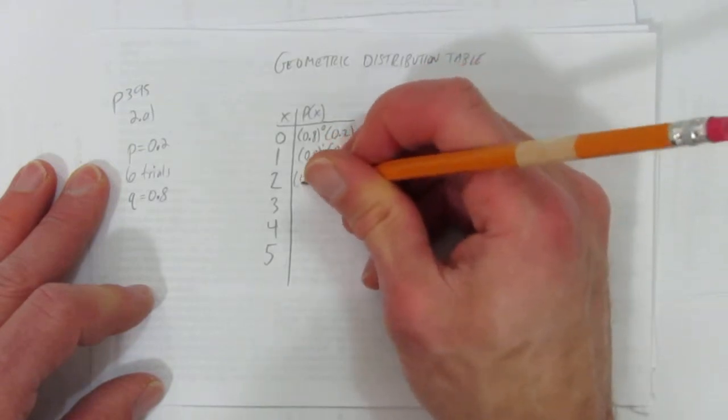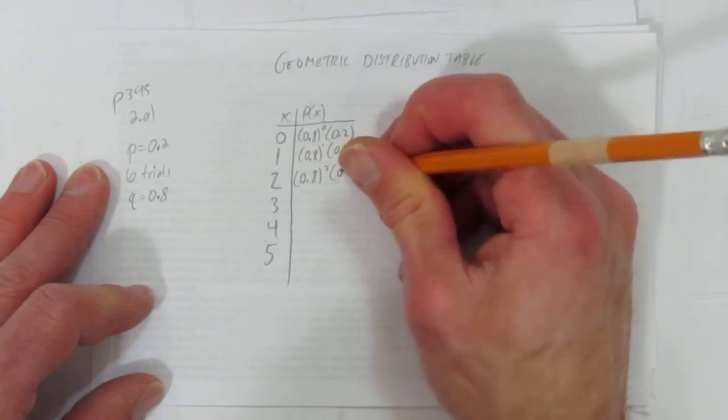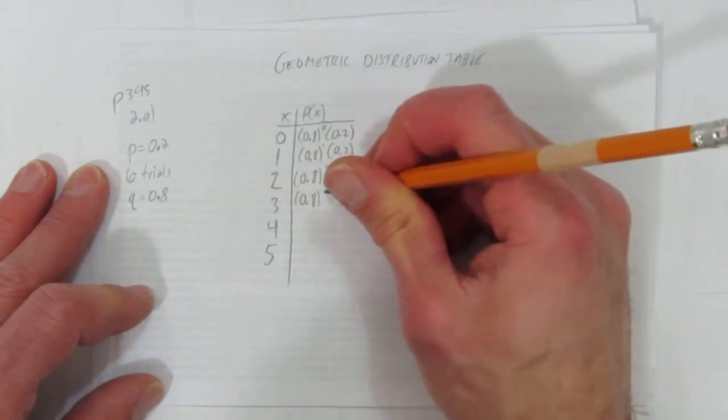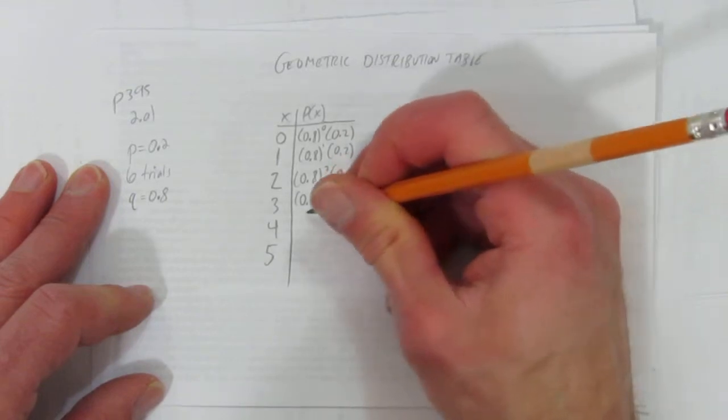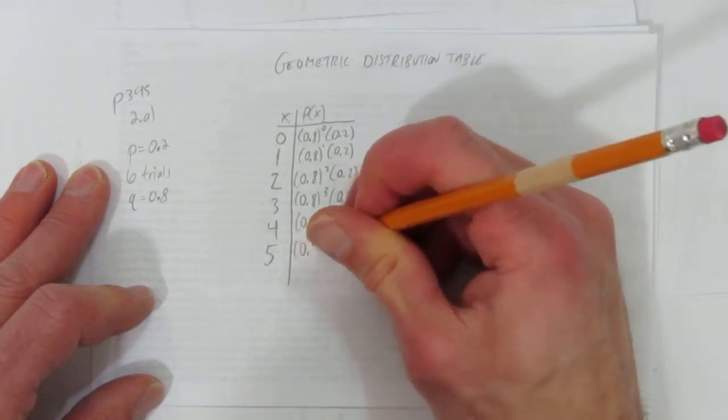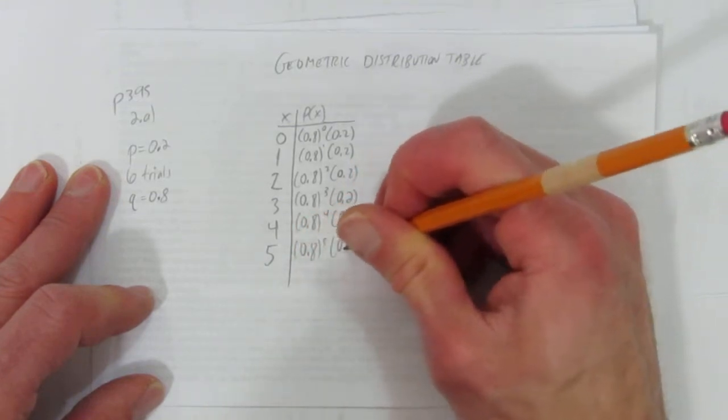And so on. Here's 2 failures happening, then our success. And 3 failures happen, then our success. And 4 failures happen, and then our success. And finally, 5 failures, and then the success.